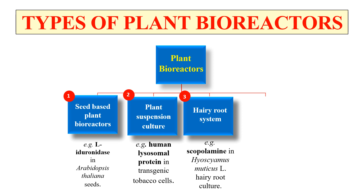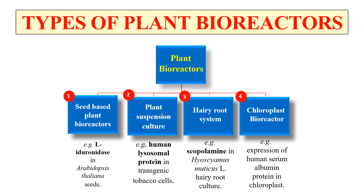Third: the hairy root system. The hairy root system involves rhizosecretion caused by infection with Agrobacterium rhizogenes, and it is highly stable and suitable for the production of different pharmaceuticals. The last type is chloroplast bioreactors — when the biological reaction or product is formed in the chloroplast, we say the chloroplast is acting as the bioreactor. To make the product in the chloroplast, we can follow two methods.